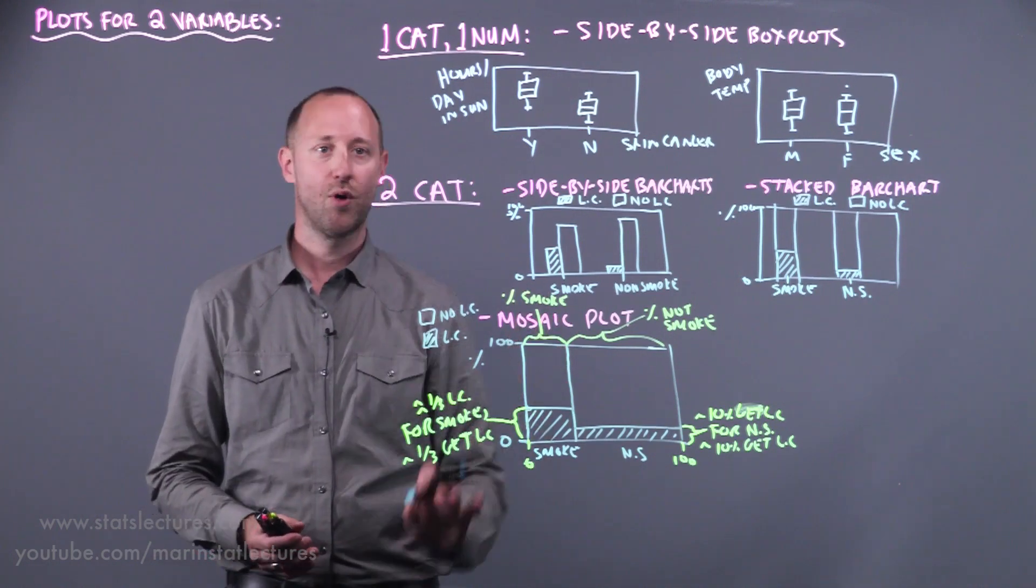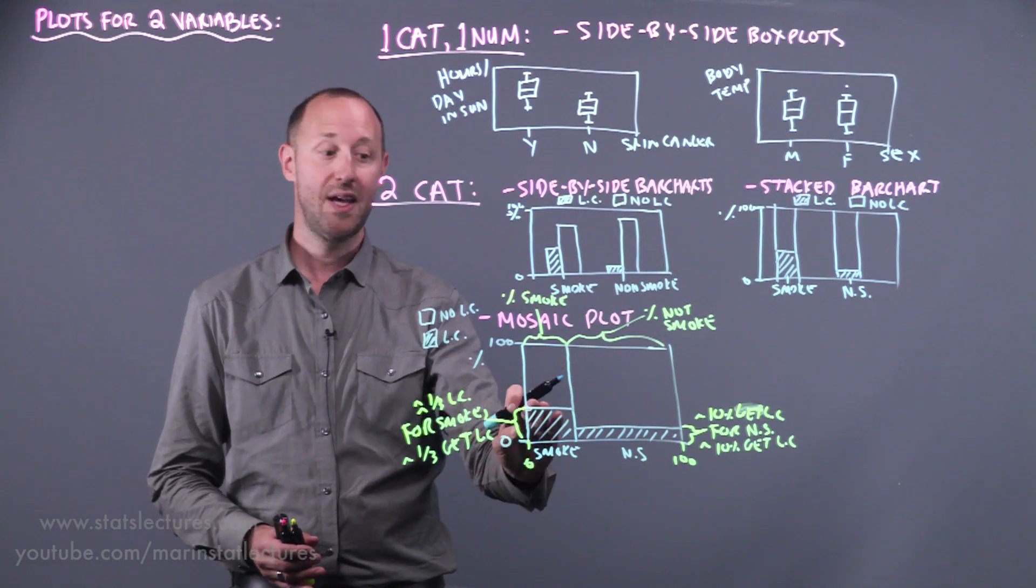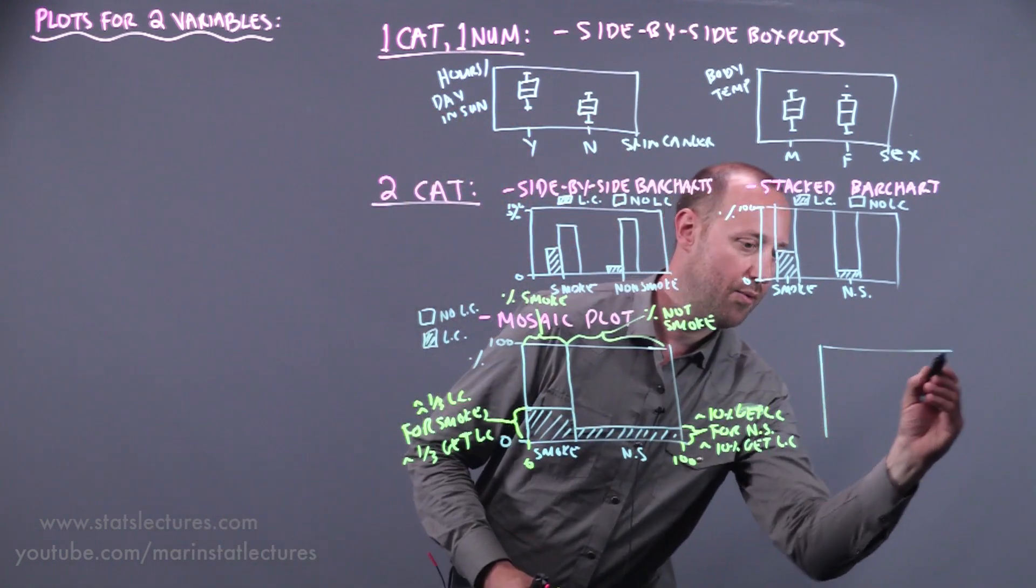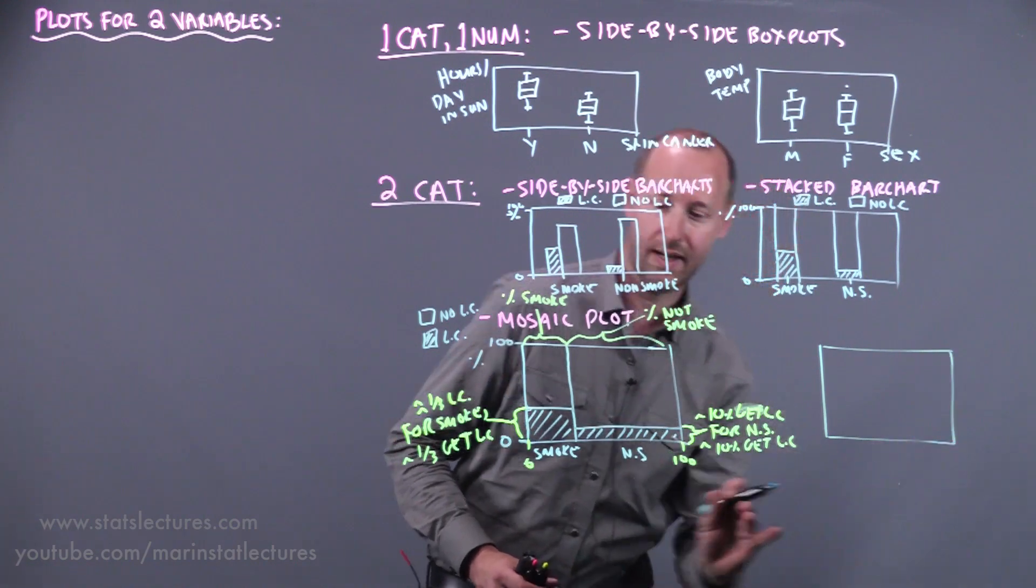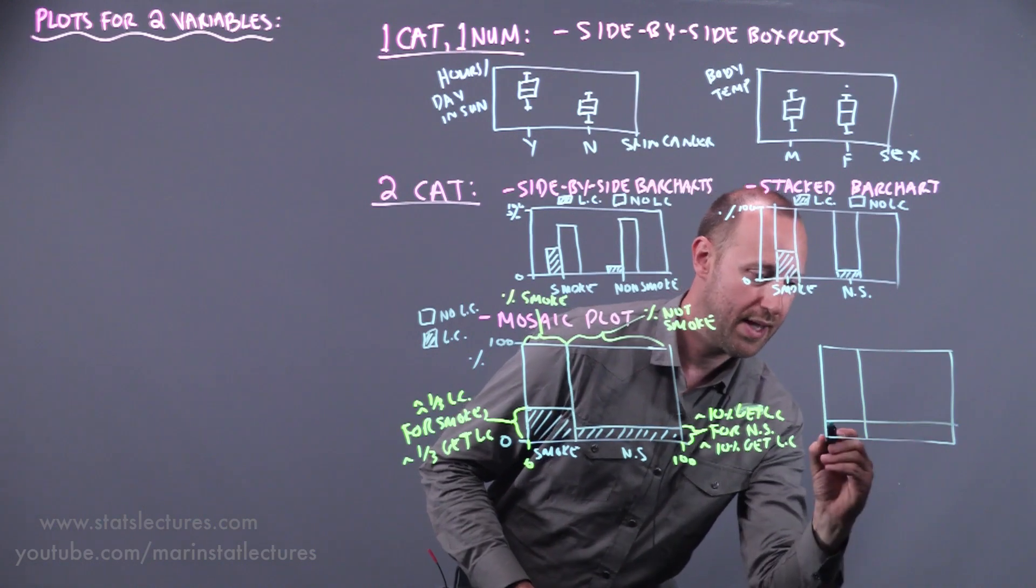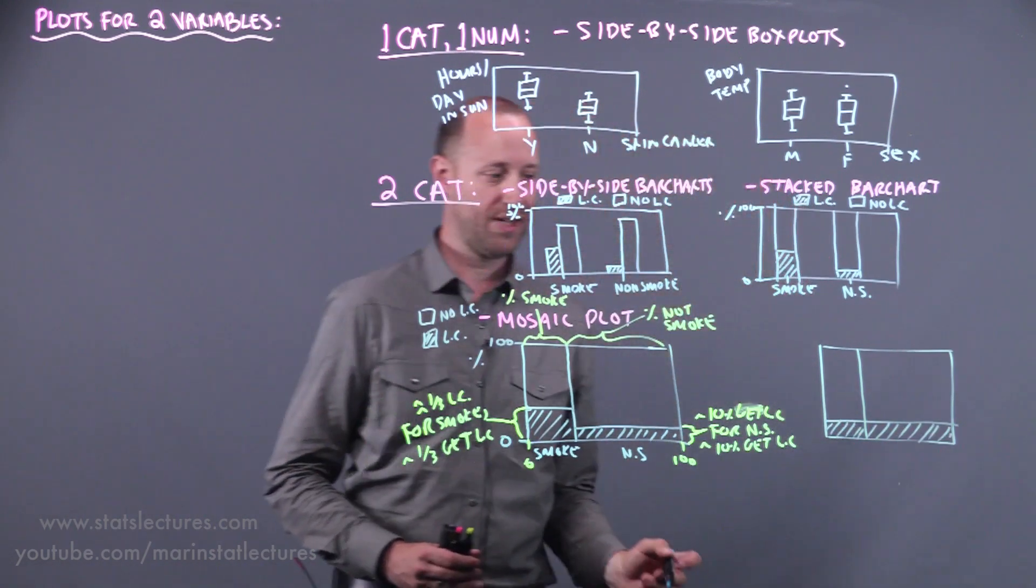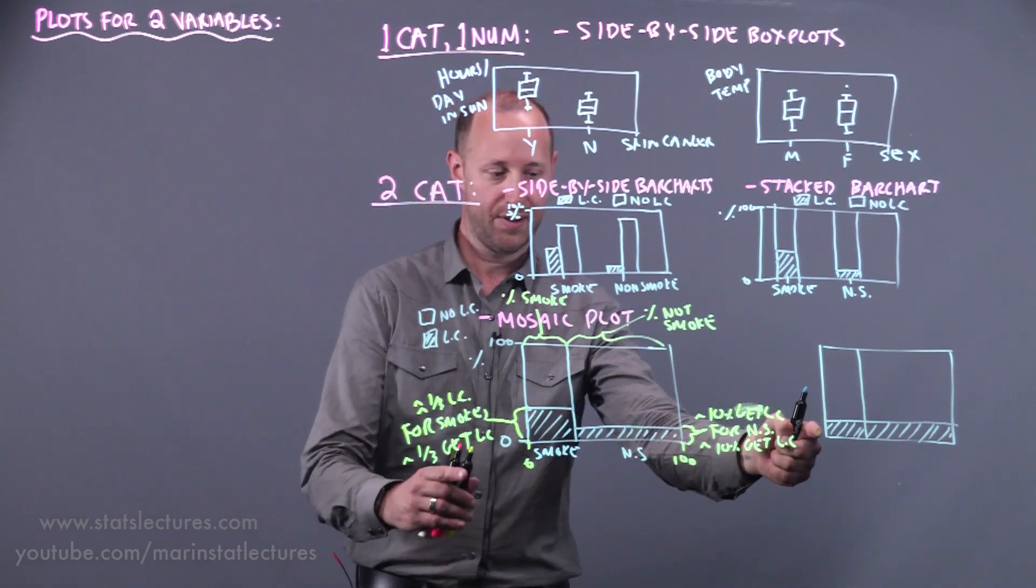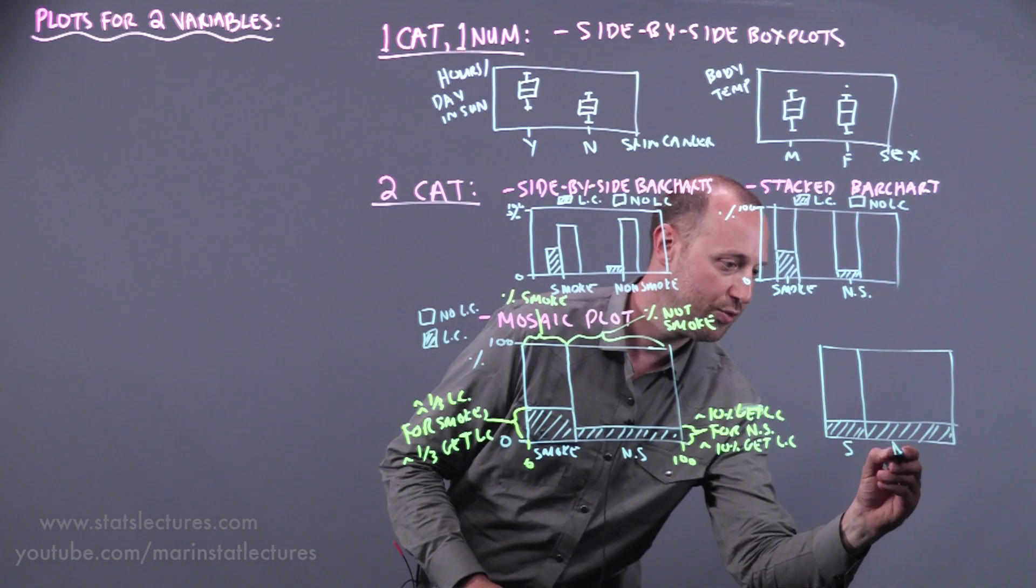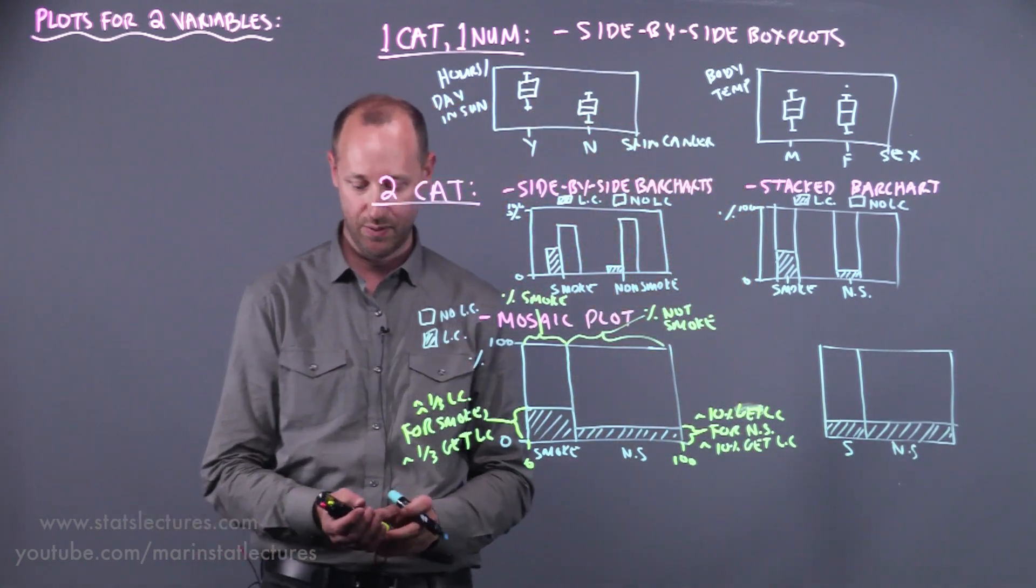Now I'm just going to draw one more mosaic plot. I won't label as much, but I'm going to draw the same plot, but if there was no association between smoking and lung cancer. The way that plot would end up looking, and again, all the same x and y axes, it would end up forming roughly a cross pattern. What that's telling us here is the proportion getting lung cancer for those who smoke and those who do not smoke are roughly the same. There is no association between the two.